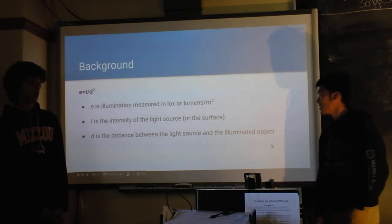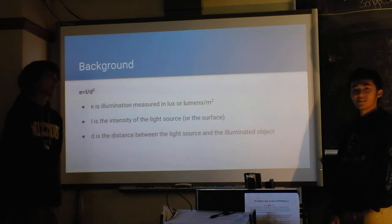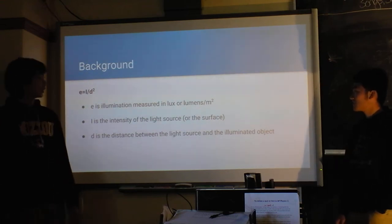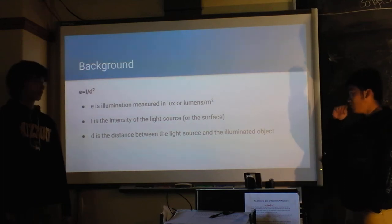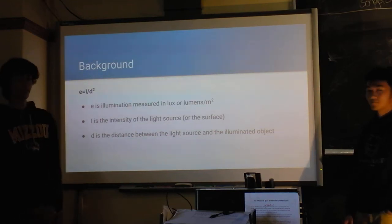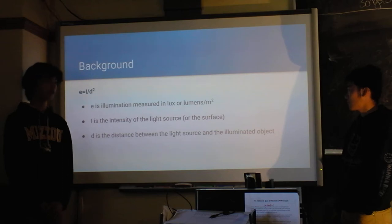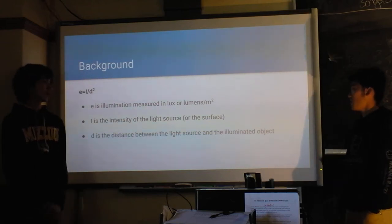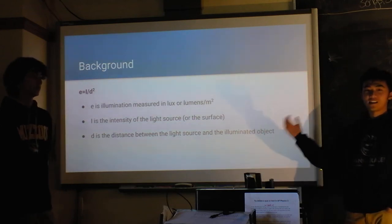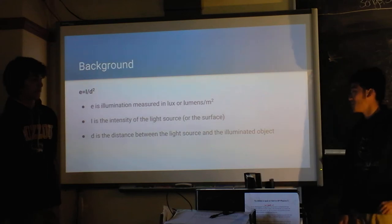The background is — we have the light intensity equation there. E equals the illumination, measured in lux or lumens per meter squared. I is the intensity of the light source measured in lumens, and D is the distance. A very important point: the lumens don't change — no matter how far the light is from the object, it always has the same lumens.